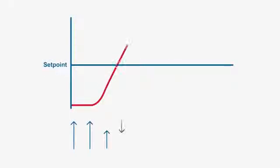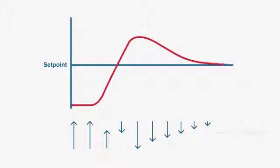We know that proportional control reduces the power as the process rises towards the set point, but if it's rising rapidly there is a danger of overshoot. Integral action will not help in this case — in fact it would still be adding more power to the process, because although the process is rising rapidly it is still below the set point. Only once the process has crossed the set point does the integral action reverse and start to reduce the power.